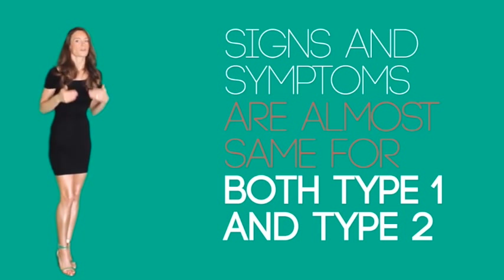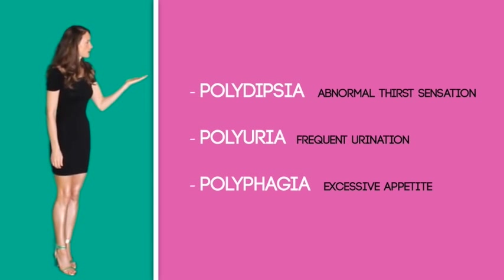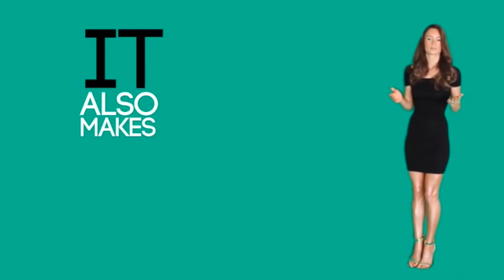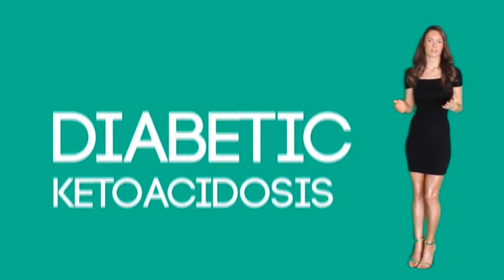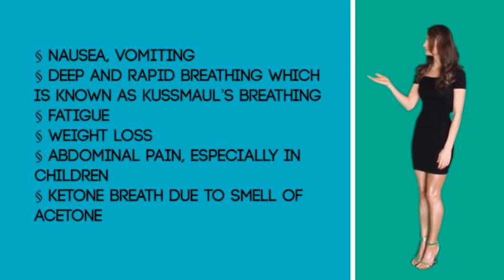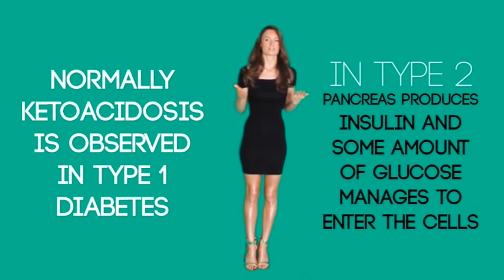Signs and symptoms are almost the same for both type 1 and type 2 diabetes. There are three typical symptoms: polydipsia, which means abnormal thirst; polyuria, which means frequent urination; and polyphagia, which means excessive appetite. When cells cannot use blood glucose due to insufficient insulin, they survive by breaking down fats, producing compounds known as ketones. While cells obtain energy from ketones, it makes the blood highly acidic, resulting in diabetic ketoacidosis.